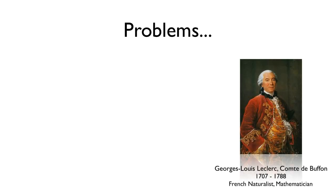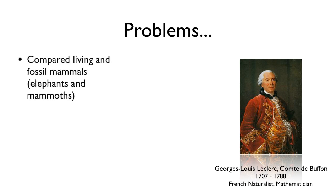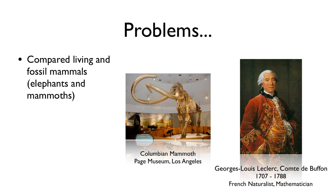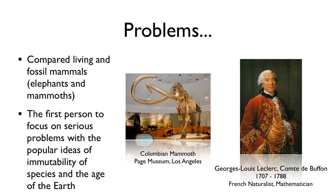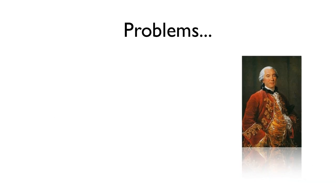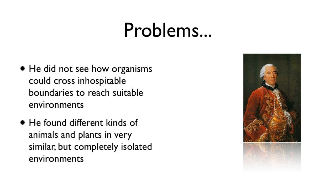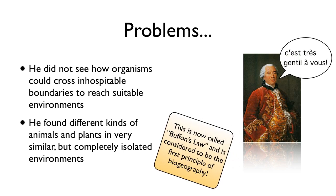A French naturalist, the Comte du Buffon, was really one of the first people to vocally question the immutability of species. He was interested in fossil mammals, especially elephants and mammoths. He also disagreed with the biblical age of the earth and didn't understand how organisms could cross inhospitable barriers to reach suitable environments. He also found different kinds of animals and plants in similar but isolated environments — and this is now called Buffon's Law, the first principle of biogeography.